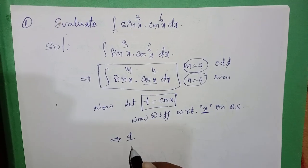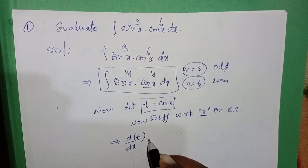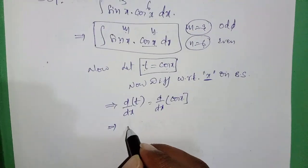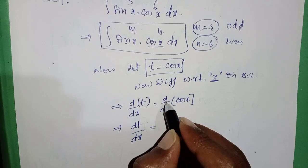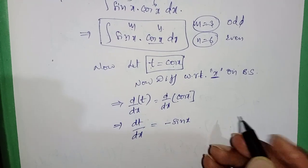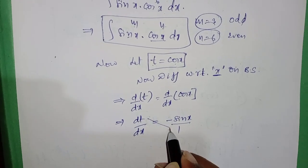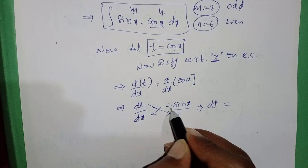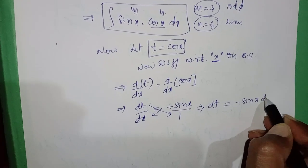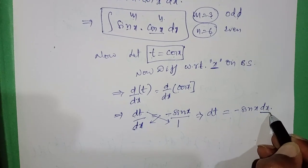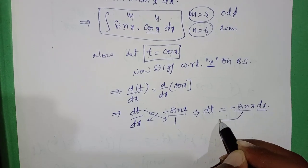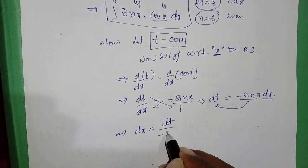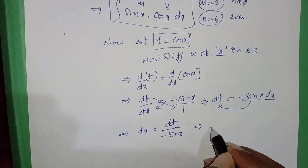Differentiating t = cos x gives dt/dx = −sin x, so by cross multiplication dt = −sin x · dx. From this we solve for dx: dx = −dt / sin x.